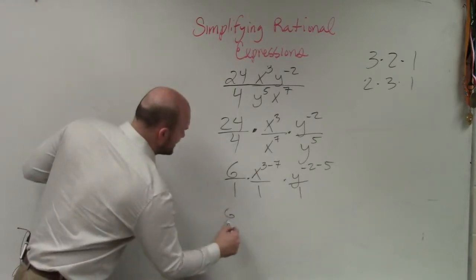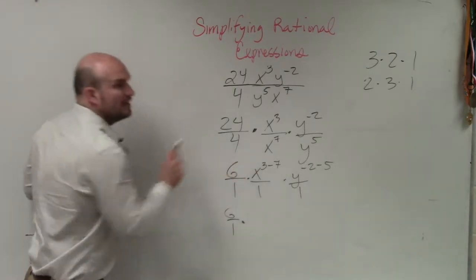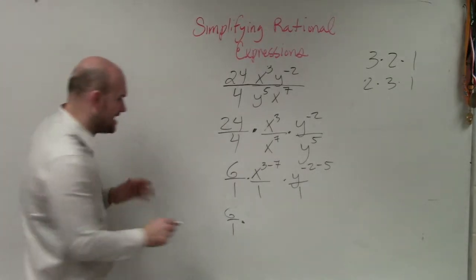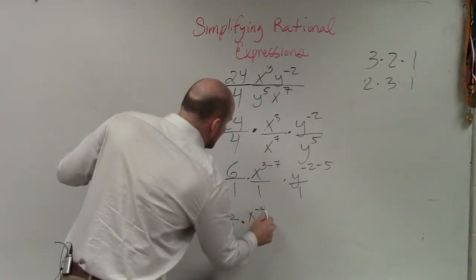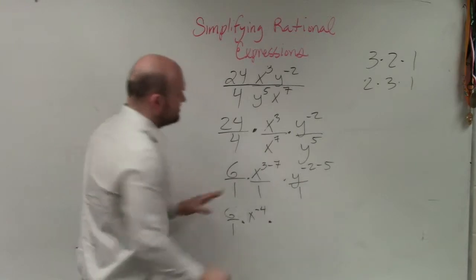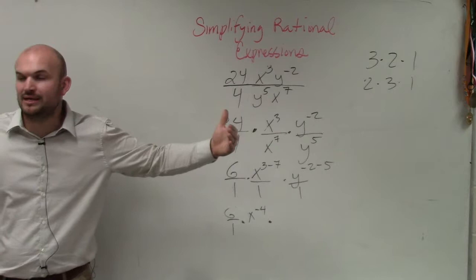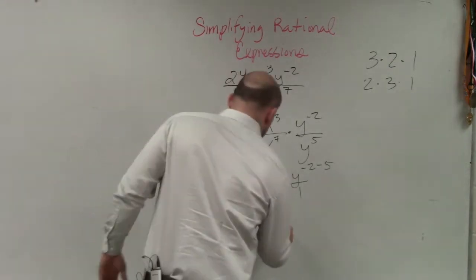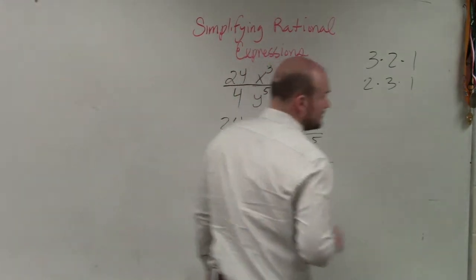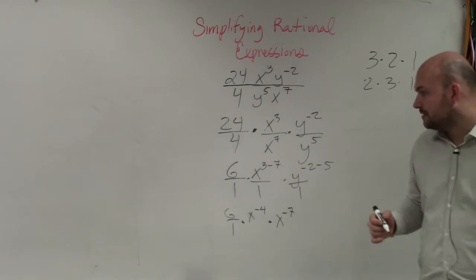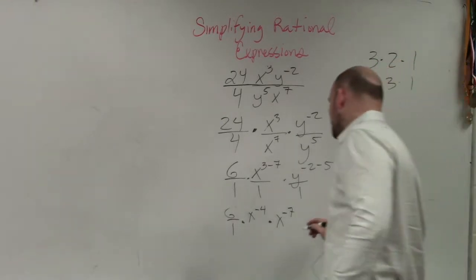Therefore, I now have 6 over 1 times—what is x to the 3 minus 7? x to the negative 4th times. What is negative 2? If you owe me $2 and then you borrow 5 more dollars, you now owe me $7. So your first answer could look like this: